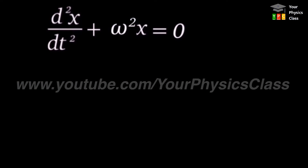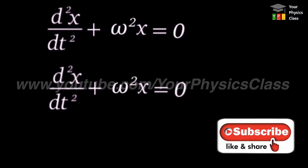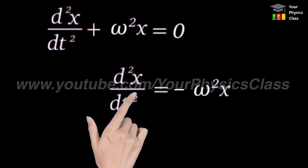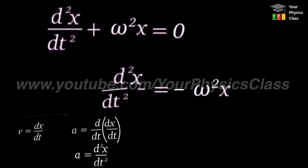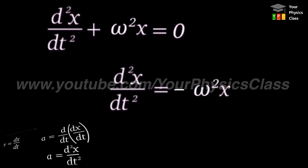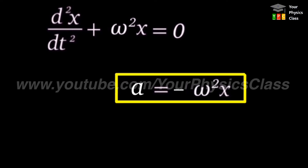Expression for acceleration: first of all, we will use the differential equation to obtain the expression for acceleration. Transporting the term containing omega squared to the right side, it becomes d²x/dt² equals minus omega squared times x. We have already seen that d²x/dt² is nothing but acceleration. So substituting, we get a equals minus omega squared x. This is the expression for acceleration of a particle performing linear SHM. This equation shows that acceleration is a function of its displacement.